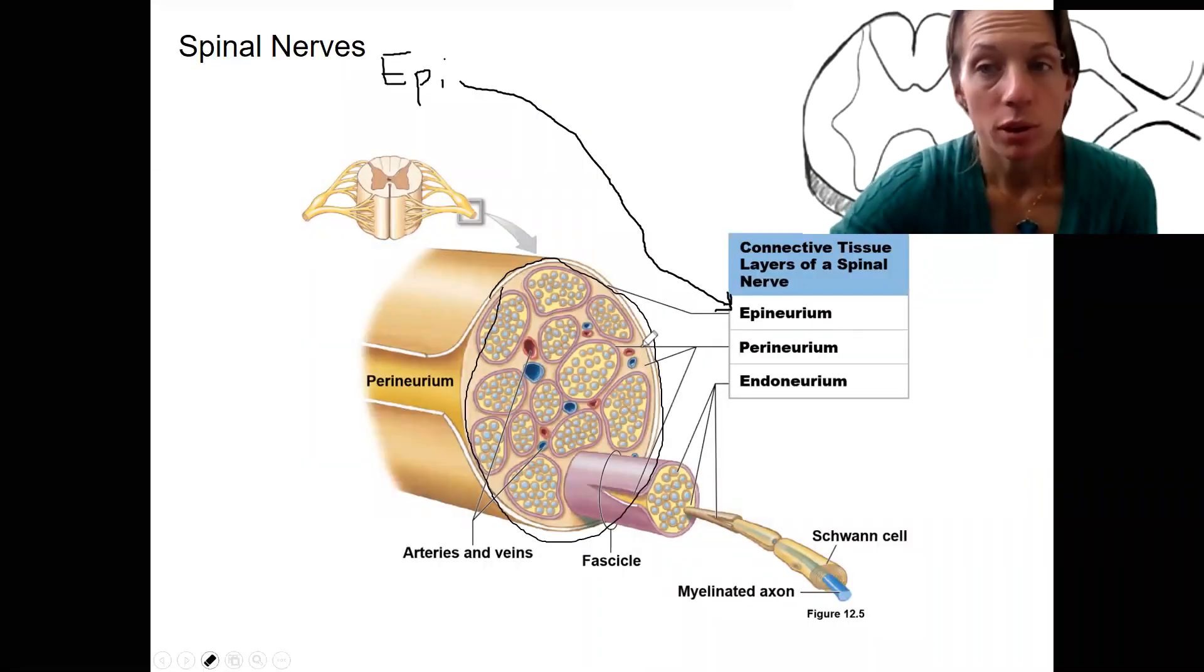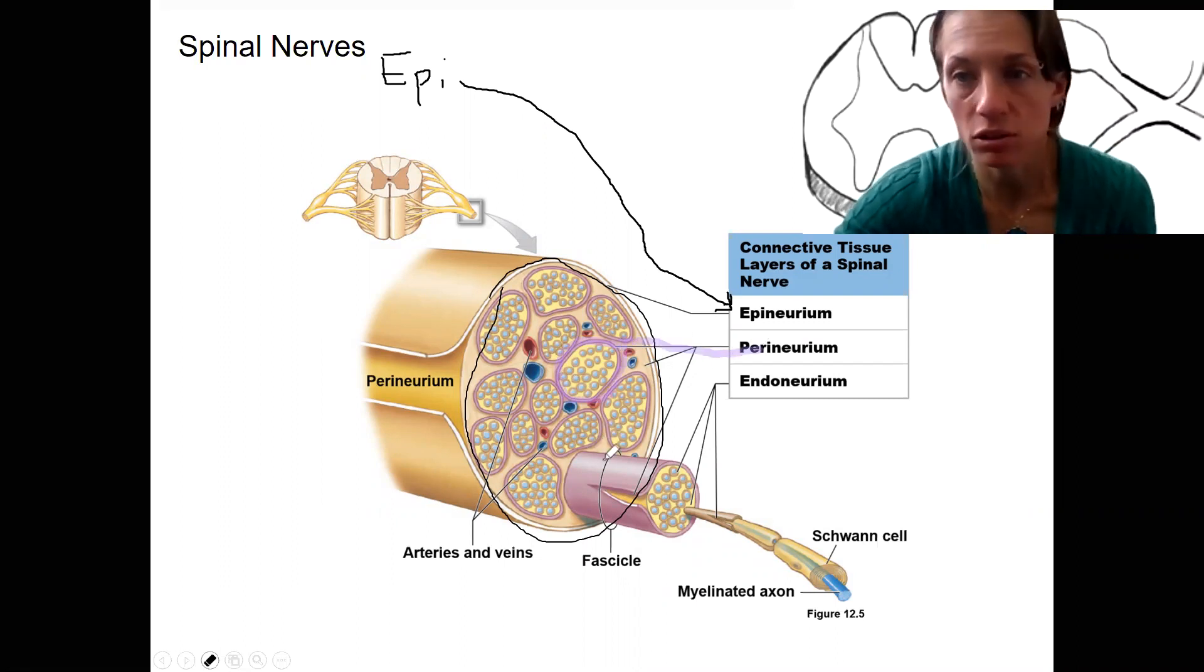Then we've also got perineurium. Perineurium, peri means around. That is this right here. The perineurium is going to surround these separate fascicles. Just like in muscles, we've got these separate bundles that are surrounded by connective tissue, these connective tissue layers that are called fascicles. So here is a fascicle as well.